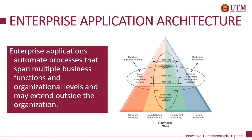Enterprise application architecture: enterprise applications automate processes that span multiple business functions and organizational levels, and may extend outside the organization. There are four functional areas: sales and marketing, manufacturing and production, finance and accounting, and human resources. Enterprise applications comprise all four functional areas and can also extend outside the organization to suppliers, business partners, customers, and distributors.